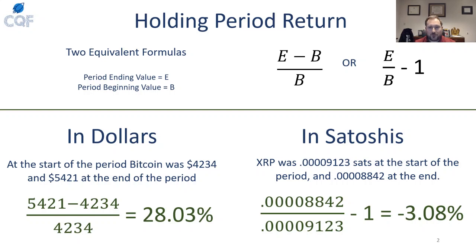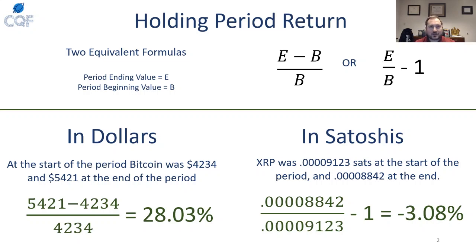Most of you are probably crypto fans, so let's do an example in Satoshis. Let's take a look at XRP or Ripple. Let's assume it was 9,123 sats at the beginning of a period and it declined to 8,842 sats at the end. Using the second formula — ending divided by beginning minus one — you can see Ripple declined by about 3% in terms of Bitcoin. Remember, this is in Satoshis. If you have any questions, feel free to comment or DM me on Twitter at CryptoQF.